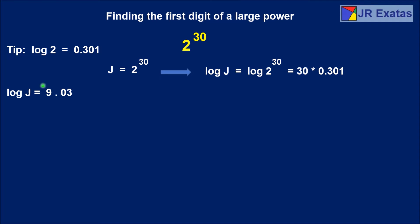With this result we can say that J has 9 plus 1 digits. J has 10 digits.